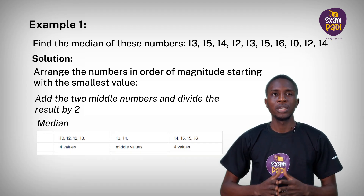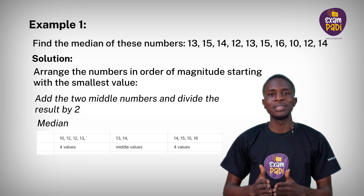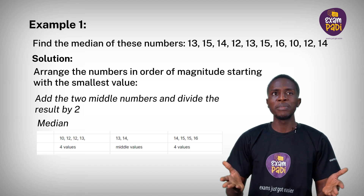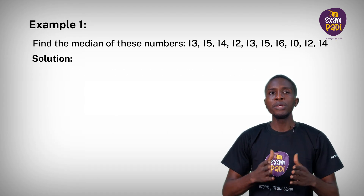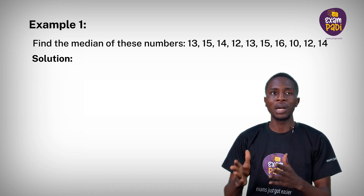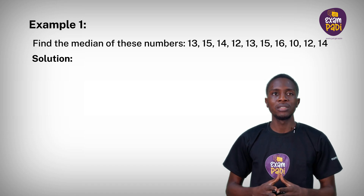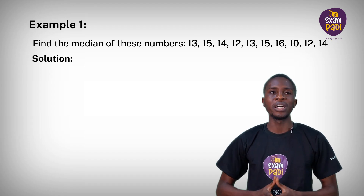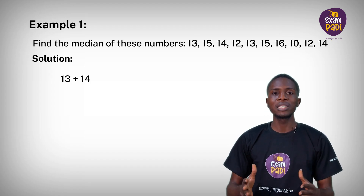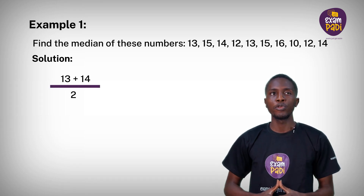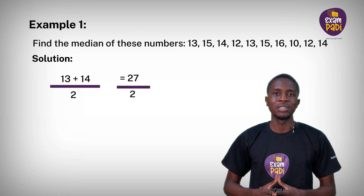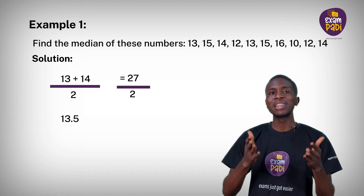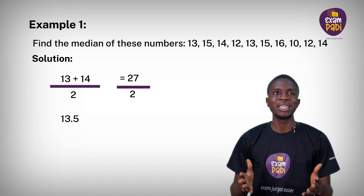Let's take a look at the chart. The numbers arranged in ascending order are: 10, 12, 12, 13, 13, 14, 14, 15, 15, 16. The middle values are 13 and 14. When you have two middle numbers, add them and divide by 2. So we have 13 plus 14 divided by 2, which gives 27 divided by 2, equals 13.5. So we can say the median of the above numbers is 13.5.